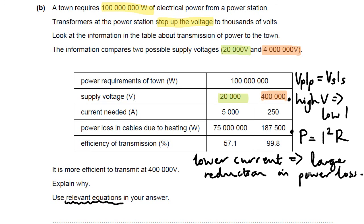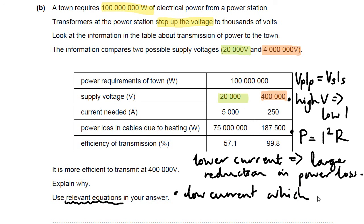It's always the current which causes the heating in the wires, which is the power loss — because current is the flow of charge and you get friction between them. The high voltage transmission is much more efficient than the lower voltage. To sum up: it is the low current which gives increased efficiency, or equivalently, higher current would cause heating and therefore power loss. Thank you very much for listening.